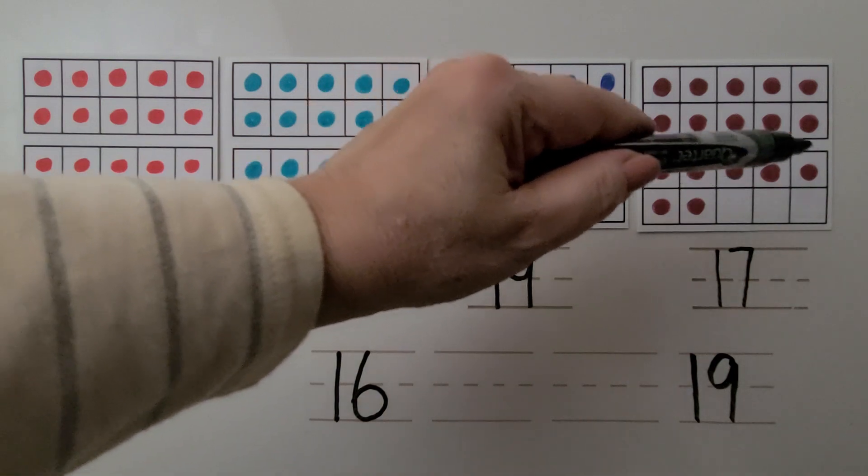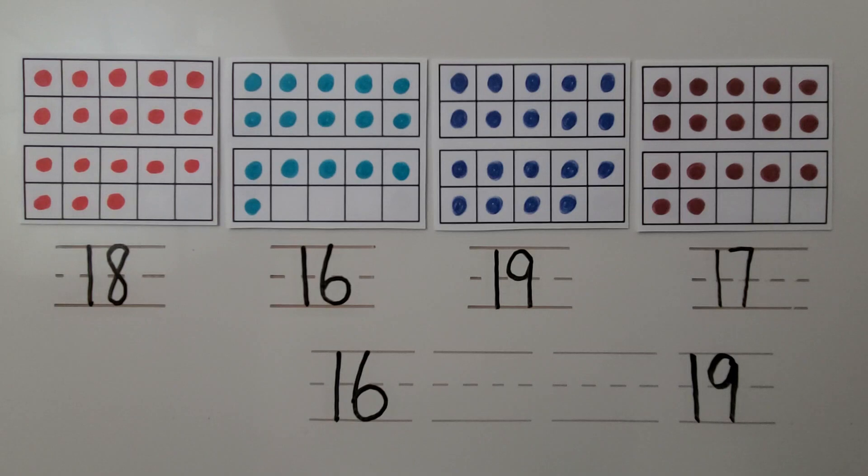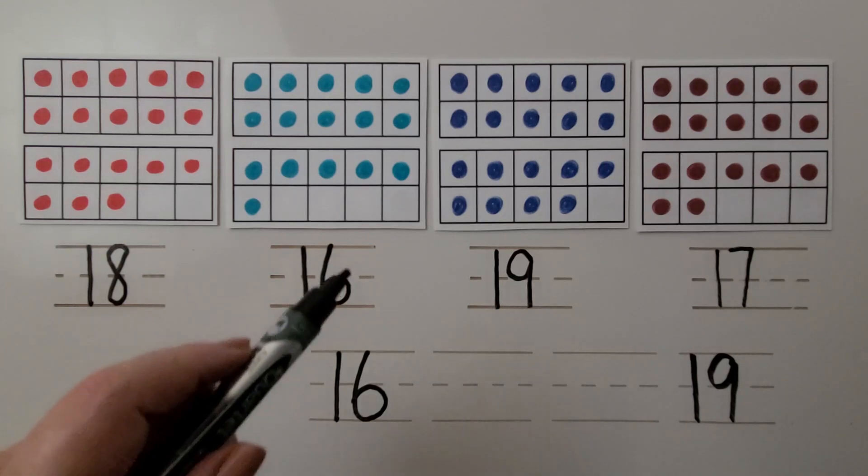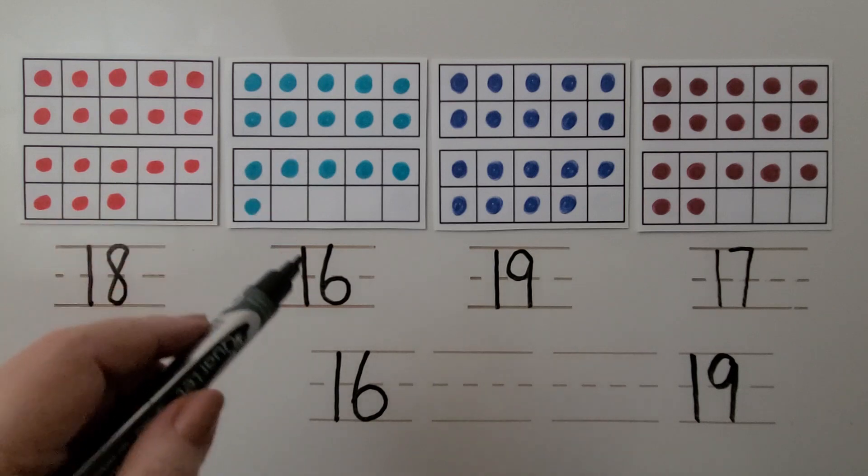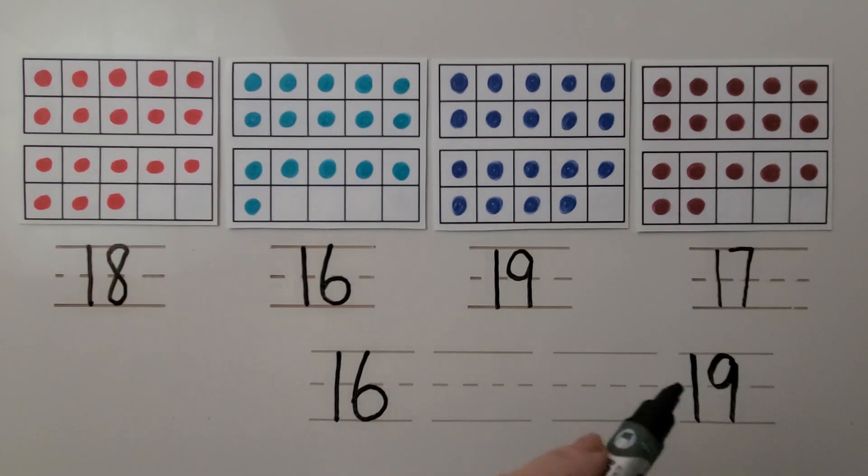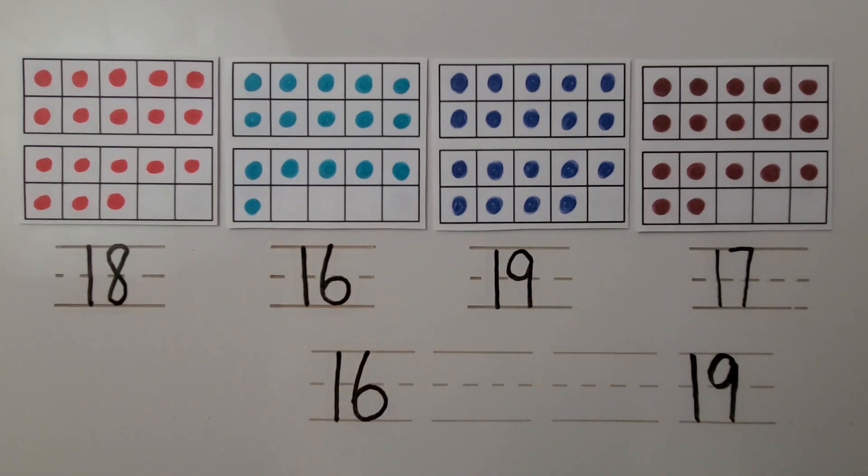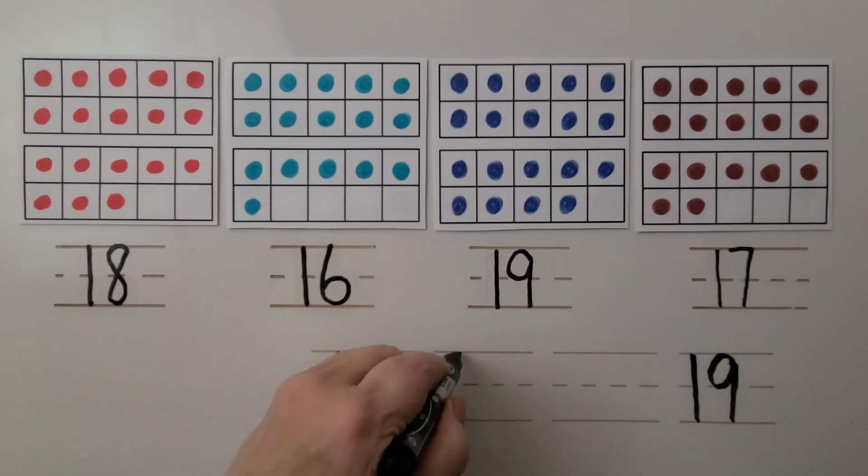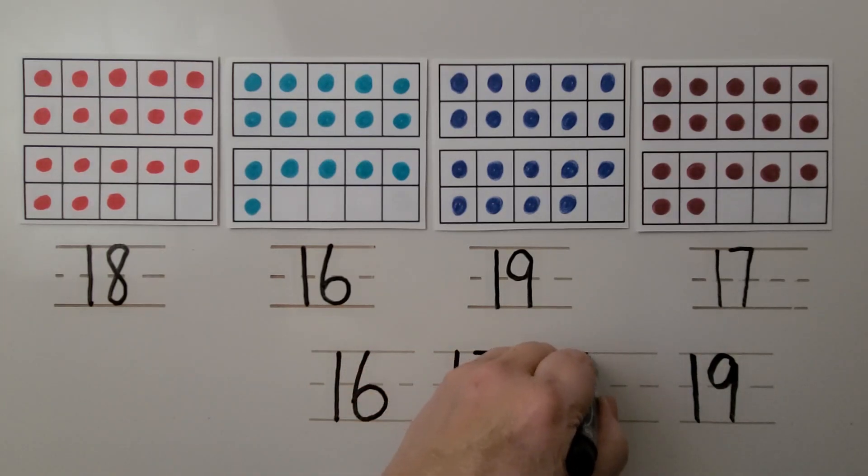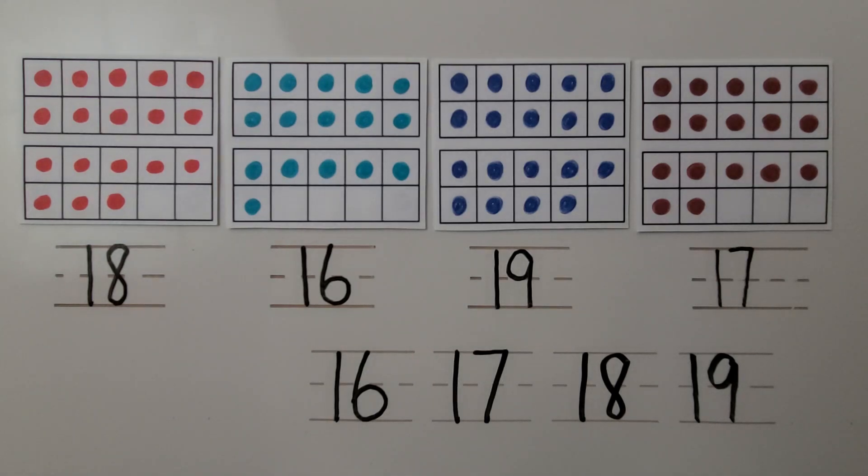And here we have 10, 11, 12, 13, 14, 15, 16, 17. So that one's 17. We need to put them in counting order. We write the least number first. That would be the number with the fewest counters in the 10 frames. That would be 16. 19 is the greatest number. It has 10 frames with the most counters in them. Do you know what numbers go here and here? If you think about counting order, we say 16, 17, 18, 19. In counting order, 16, 17, 18, 19.